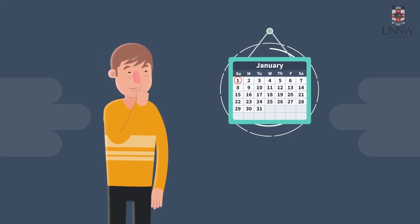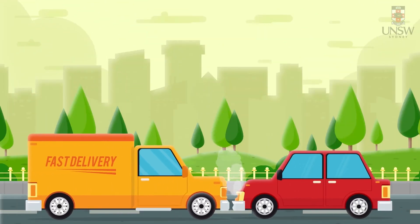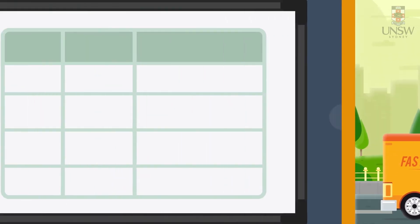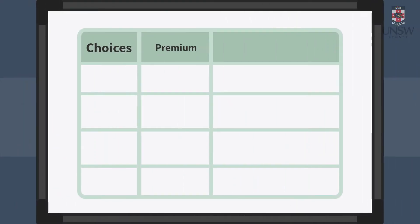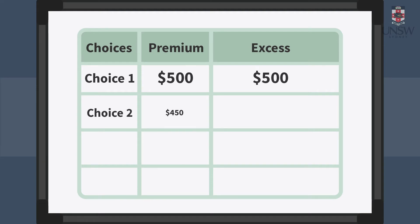But also, if you have a car, surely you have had to make a choice on the level of excess for your comprehensive car insurance. Here, the choice is typically a trade-off between a reduction of premium now, say $450 instead of $500,